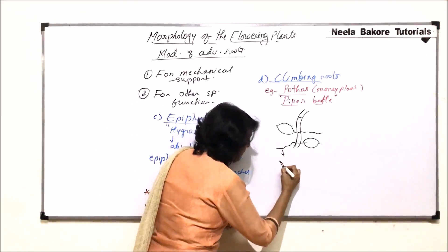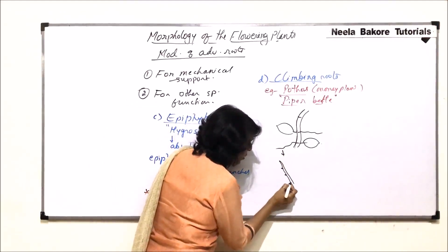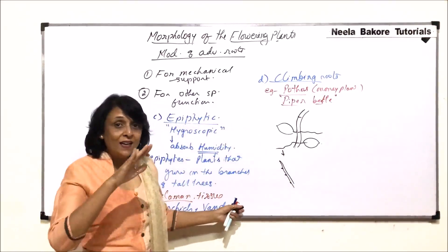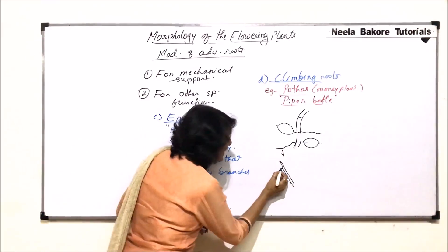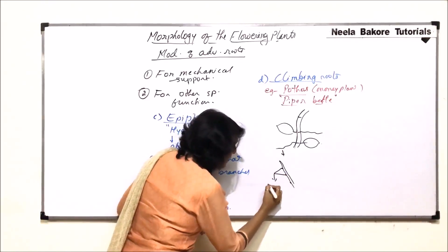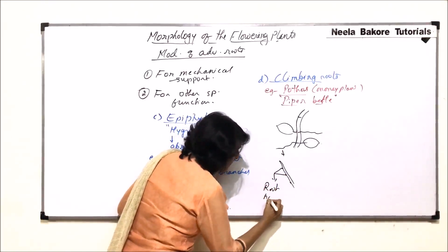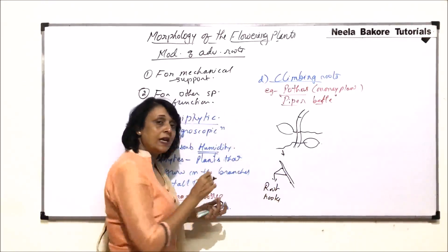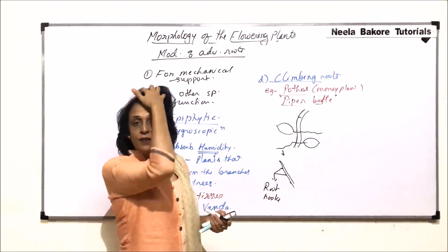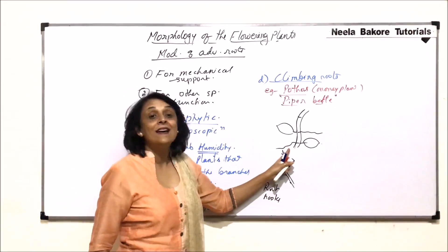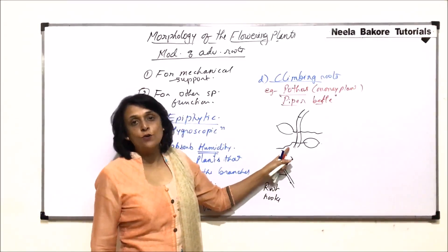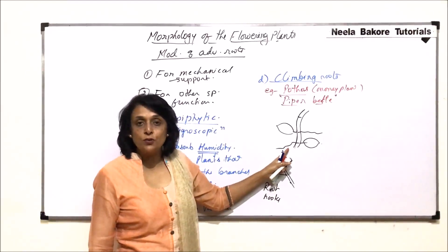If we enlarge this part, then we would find that there are small hook-like structures at the lower side. And, these are known as the root hooks. So, root hook is also a modification of adventitious root. And, these climbing roots are also modifications of adventitious root.